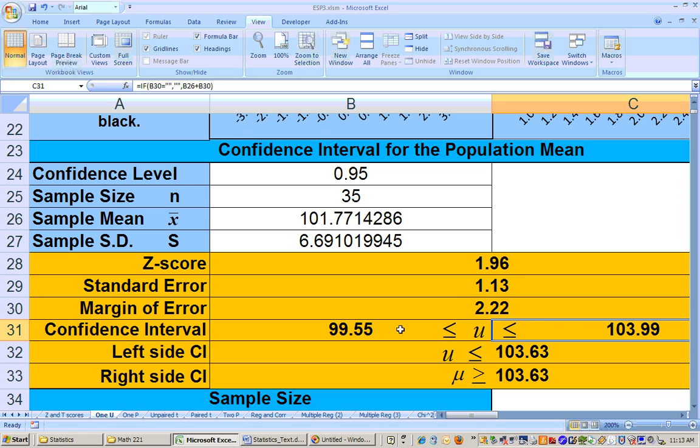Well, we would subtract these two numbers, take 99.55 from 103.99 and divide by 2, and you'll get the margin of error, 2.22.